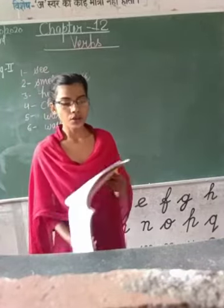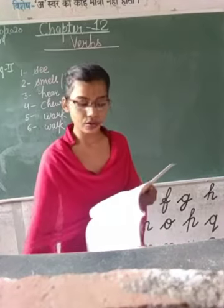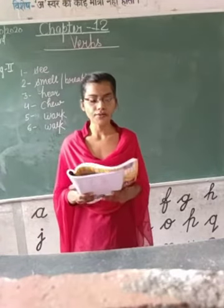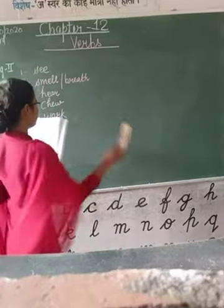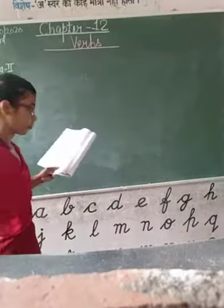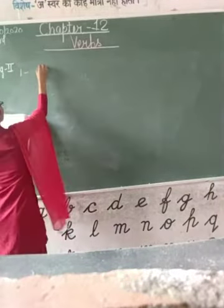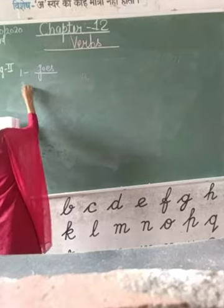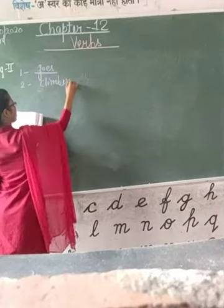Firstly we will read the question. The question is: underline the words in these sentences. You have to underline the words in the given sentences which are from 1 to 10. Let's start. First sentence: goes to school — you will underline 'goes' because it is a verb. Second: Asha is climbing the tree — you will underline 'climbing'.